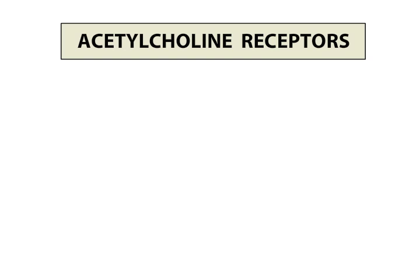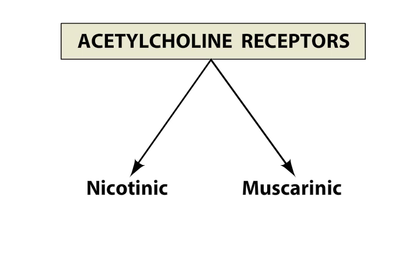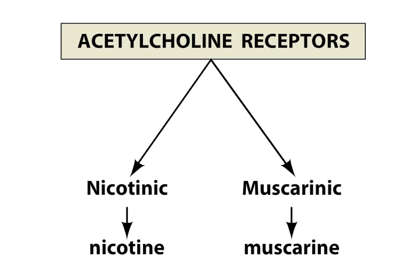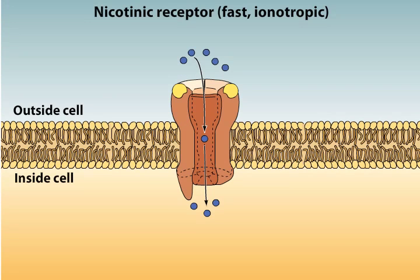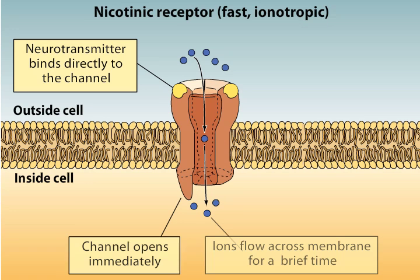There are two broad classes of ACH receptors: nicotinic and muscarinic receptors. These receptors are so named because of the drugs nicotine and muscarine that selectively activate each of the receptors. Most nicotinic receptors are ionotropic, responding rapidly and usually having an excitatory effect.